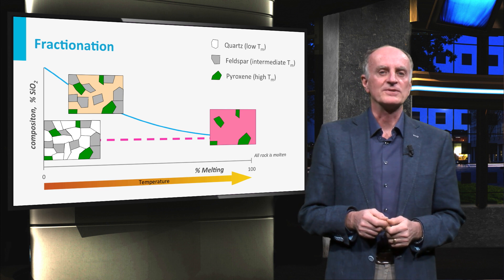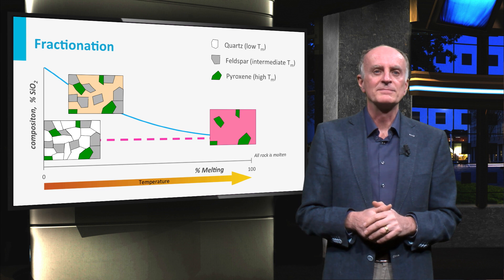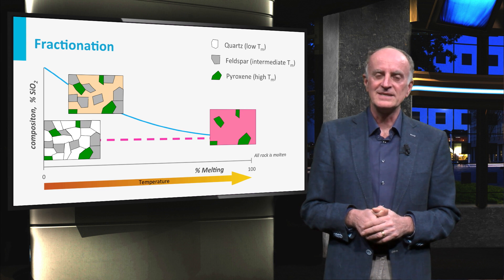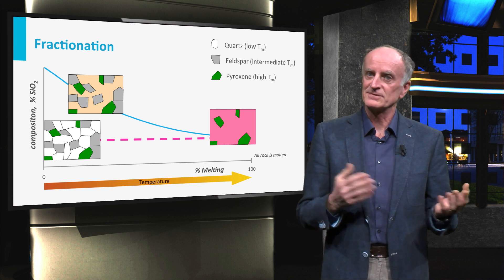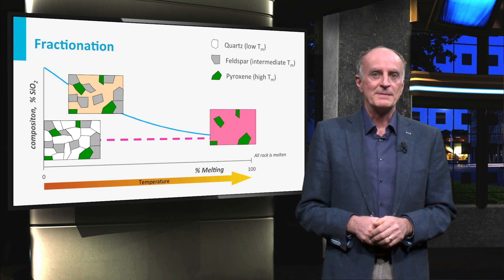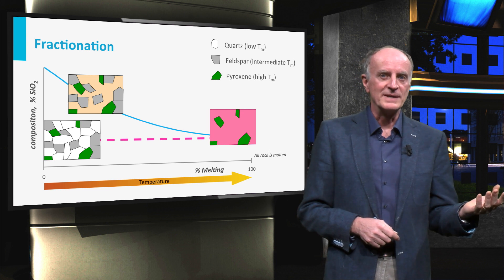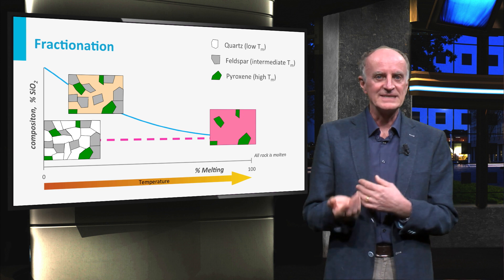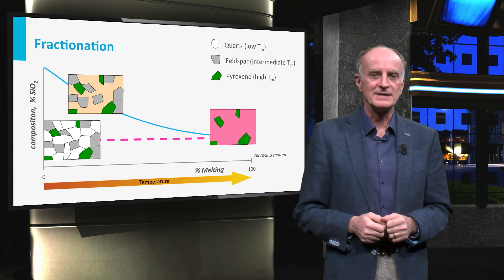As a result of fractionation, limited melting produces magmas which are acid and relatively cold, 600-700 degrees. Magmas generated by complete melting, on the contrary, are more basic and have generally higher temperatures.